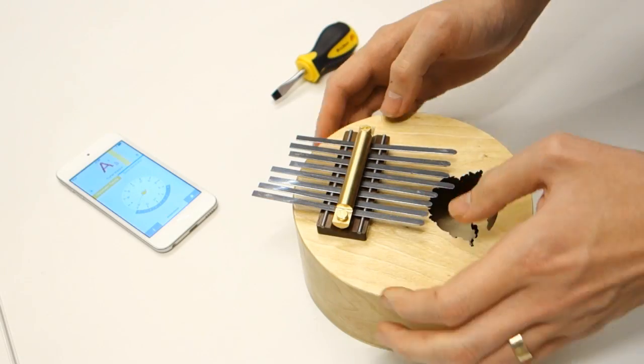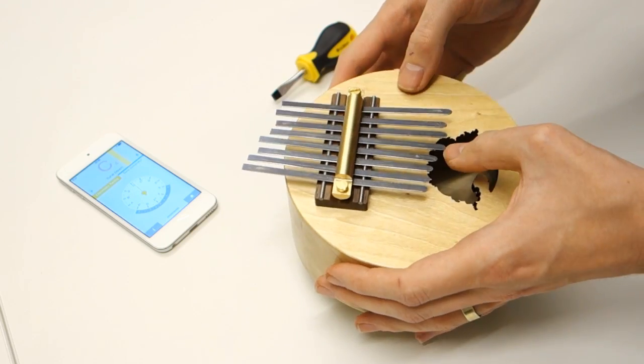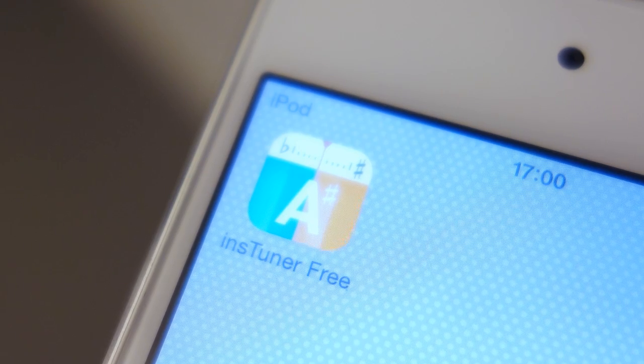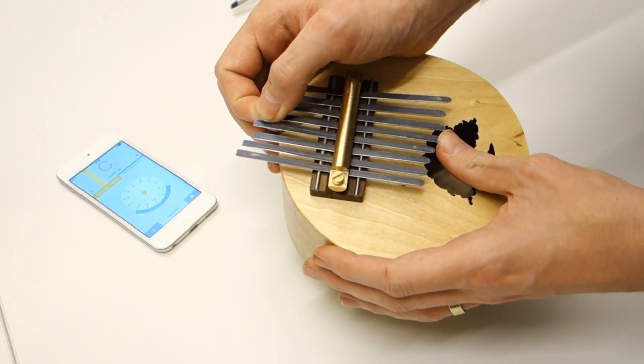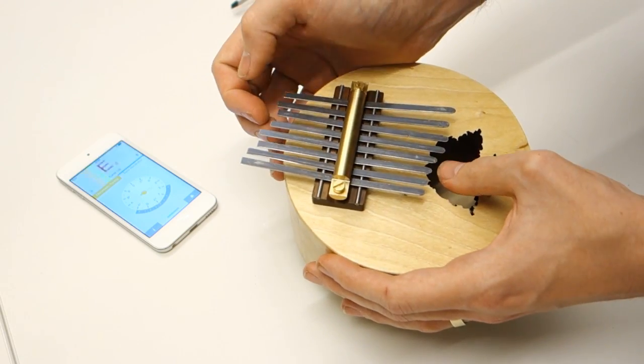Tuning a kalimba is very easy, but unless you have a great ear for tones and notes, I would recommend getting a tuner, or what I did, a tuning app for your phone. The process of tuning is very simple. Just move a tine in or out and pluck it. Make adjustments until all your tines are in tune.